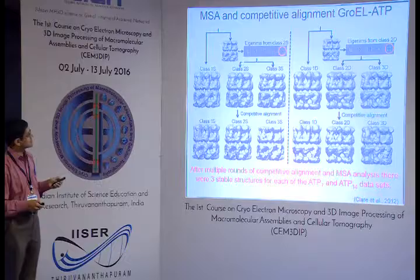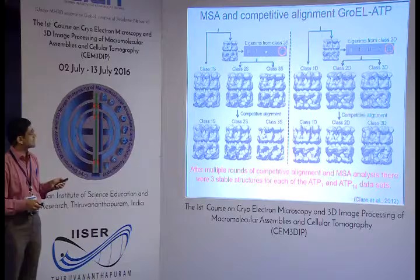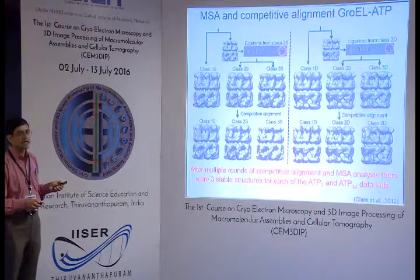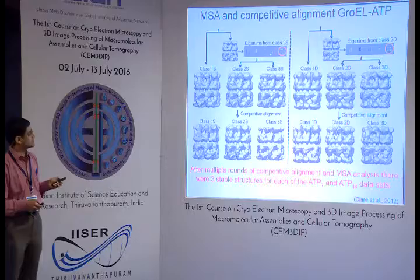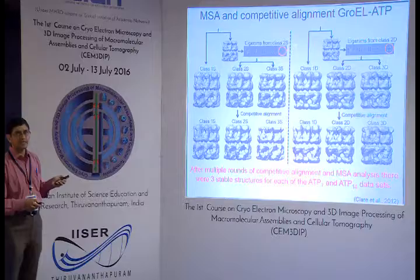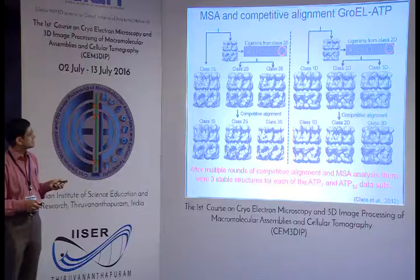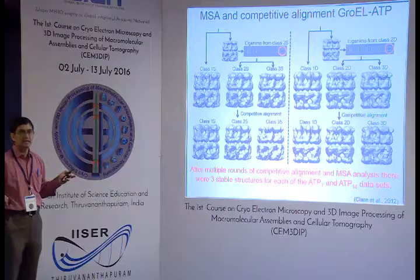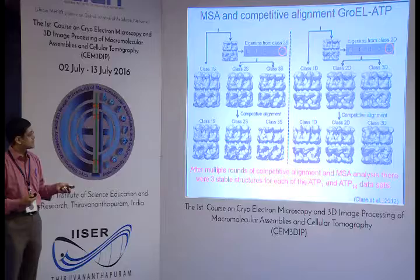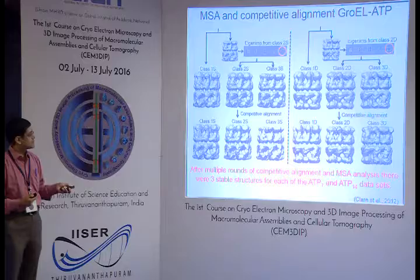Further refining the classification, particles were classified into more homogeneous subgroups based on eigenimages. Distinct density in the eigenimages shows variance in the top and apical region of GroEL. After MSA classification, we say: use this eigenimage to separate into two subclasses — one with that variance and one without. Competitive alignment then allows particles to align to three class references. After competitive alignment and final 3D reconstruction, this was published in 2012.